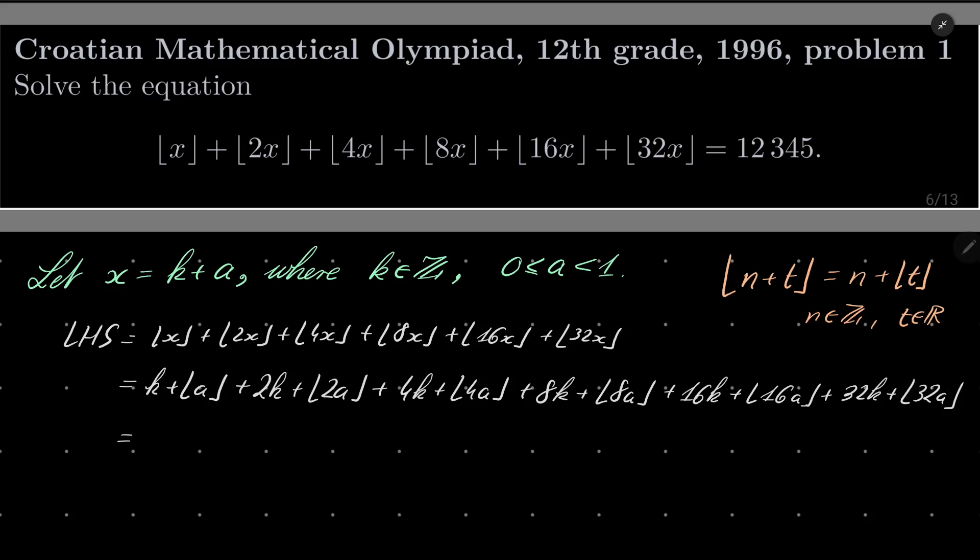Now what can we do? We can combine the k's: k plus 2k plus 4k plus 8k plus 16k and so on can be added. It's 63k and we have our remainder. Floor of a is 0 because a is between 0 and 1, but the next floors need not be 0, so I will write them.